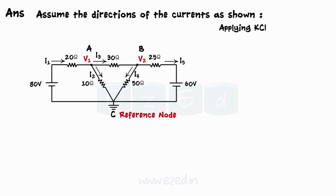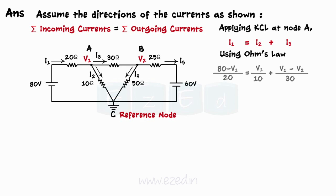Applying Kirchhoff's current law at node A, sum of incoming currents equals sum of outgoing currents. Using Ohm's law, we can write 80 minus V1 upon 20 equals V1 upon 10 plus V1 minus V2 upon 30. On solving, we get an equation with V1 and V2 as two unknowns.